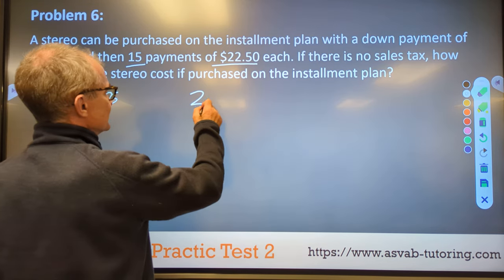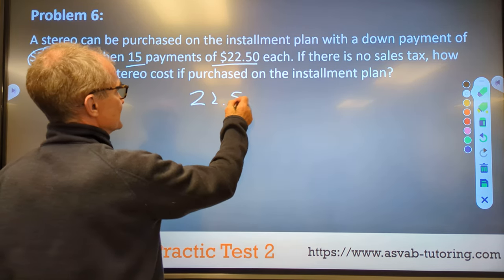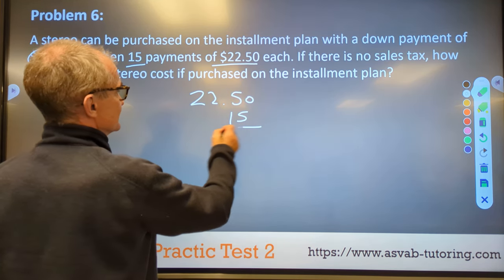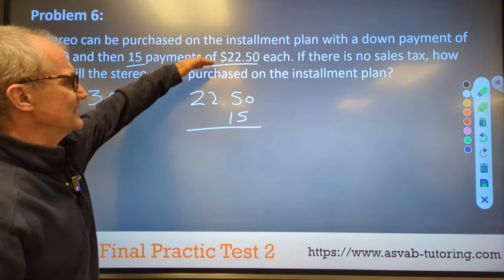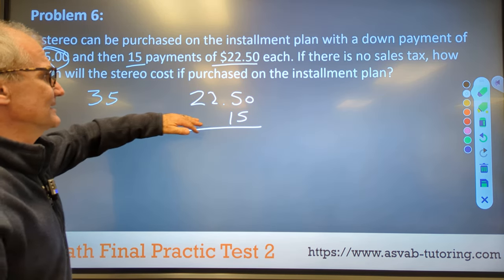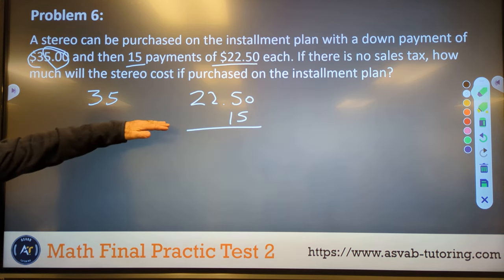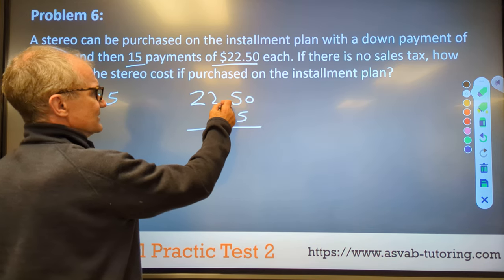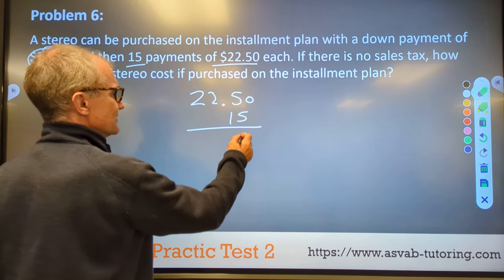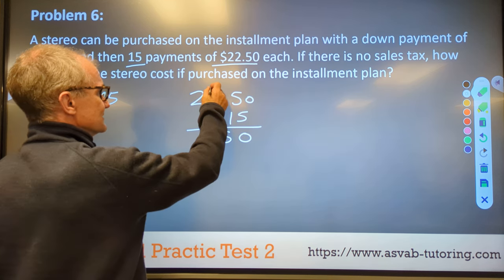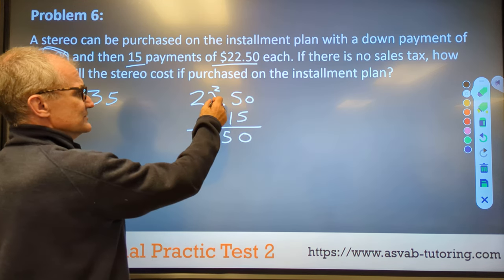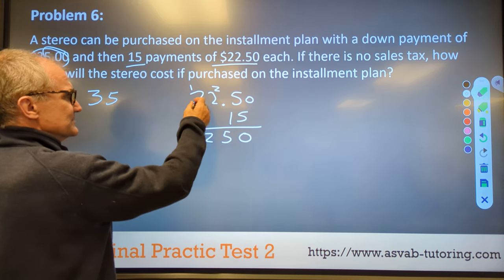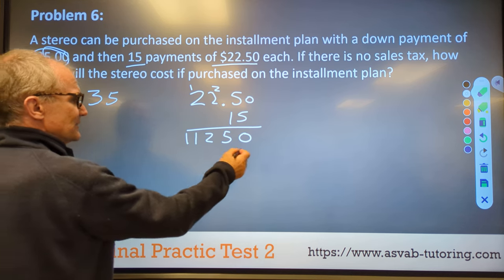So I got 22.50 times 15, right? I got 15 payments of that amount. So I'm going to multiply those together. And then I got my down payment of 35. So multiply those, add that, and that's our number. I got two decimal places over here. So I got to remember that. Five times zero. Five times five, 25. Carry the two. Five times two, 10. Plus two, 12. Carry the one. Five times two, 10. Plus one, 11. My placeholder.